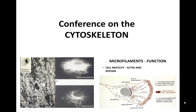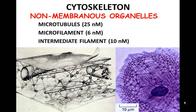Today the conference is on the cytoskeleton. The cytoskeleton is a non-membranous organelle composed of three major components: microtubules, microfilaments, and intermediate filaments. If you stain the various proteins in the cell with Coomassie blue, you would see a network of these cytoskeletal non-membranous organelles.